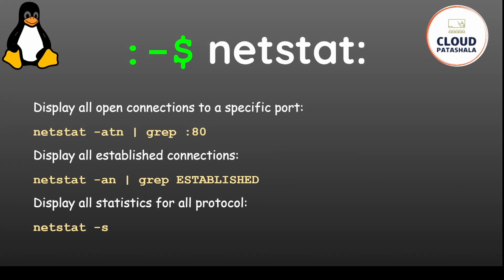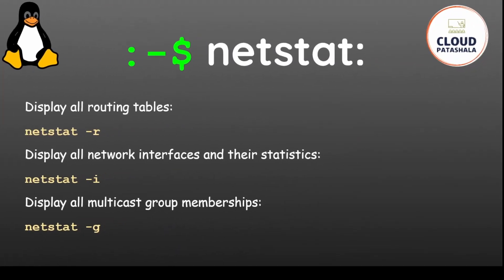To display all established connections, you could use the grep command to search for 'established', which gives you a quick overview. If you want to see statistics of all protocols, you can say netstat -s, which gives a detailed statistical report. To display routing tables you could say netstat -r. To check network interfaces and their statistics you could say netstat -i.